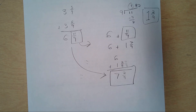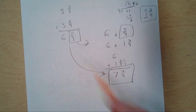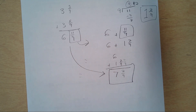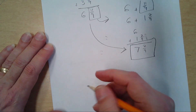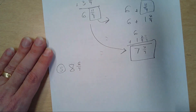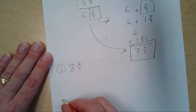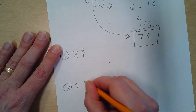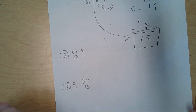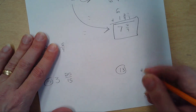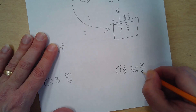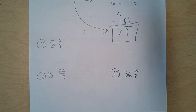I don't think the adding part is going to be a challenge for you — it hasn't been at any point. So I'll give you a few of these. Just convert them like we did — convert them, clean them up, simplify it. Number 5: do 8 and 6 fourths. Number 7: 3 and 20 over 15. And 13: 36 and 8 over 8. Clean all those up and make them proper mixed numbers. Simplify the fraction if you have to.